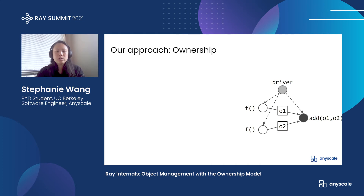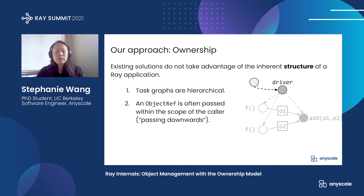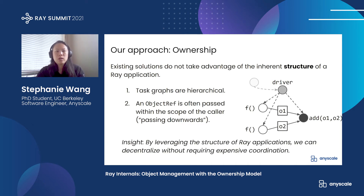Our key insight is that coordination is only expensive in existing solutions because they don't take advantage of the inherent structure of a Ray application. First, Ray task graphs are inherently hierarchical. In our earlier example, the program itself could have been invoked by a different task, and these function invocations naturally form a tree. Second, although passing an object ref creates shared state between processes, in most cases the scope is actually limited to passing downwards through a tree. So in our example, the driver only passes O1 and O2 in its local scope, meaning that its parent never actually sees these values. So by exploiting the inherent application structure, we can actually decentralize Ray without having to coordinate between all of the processes — we just need to coordinate between the processes that actually share state. In contrast, a centralized master takes the extreme approach of centralizing all system state in one place, no matter which worker created it or which worker will need it in the future.